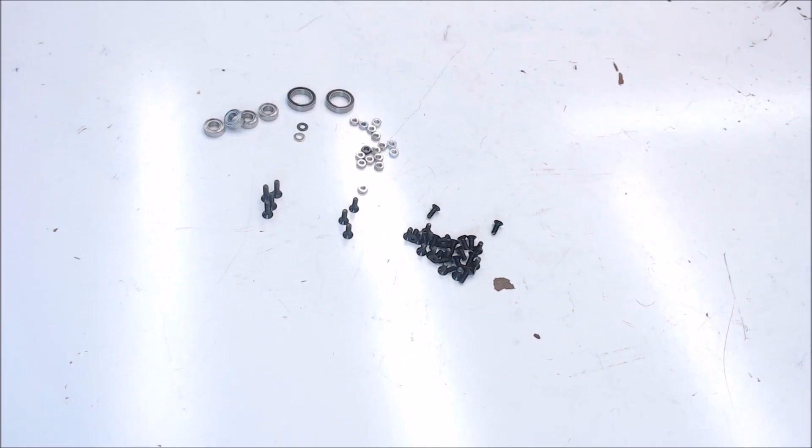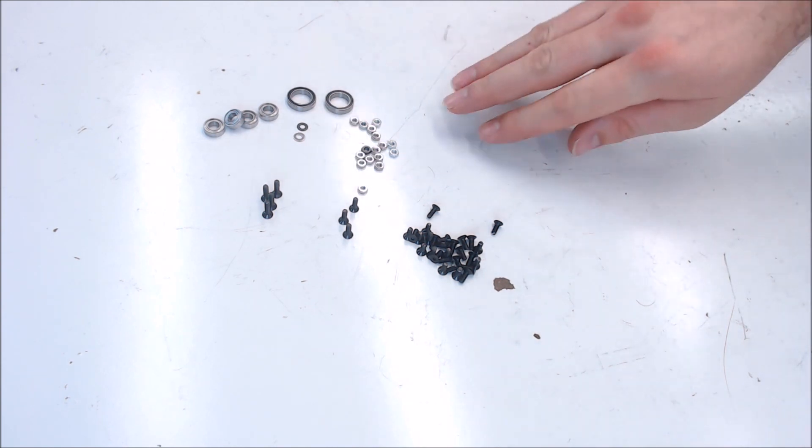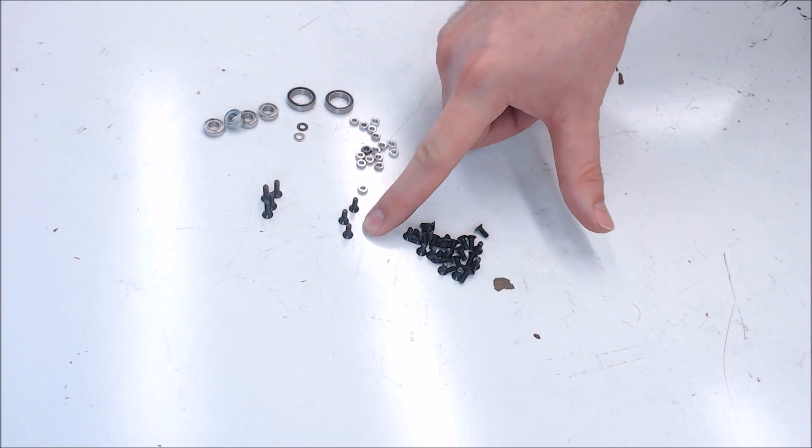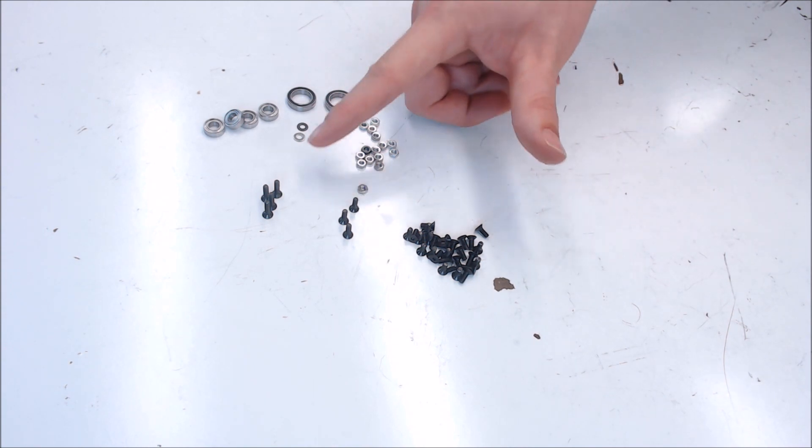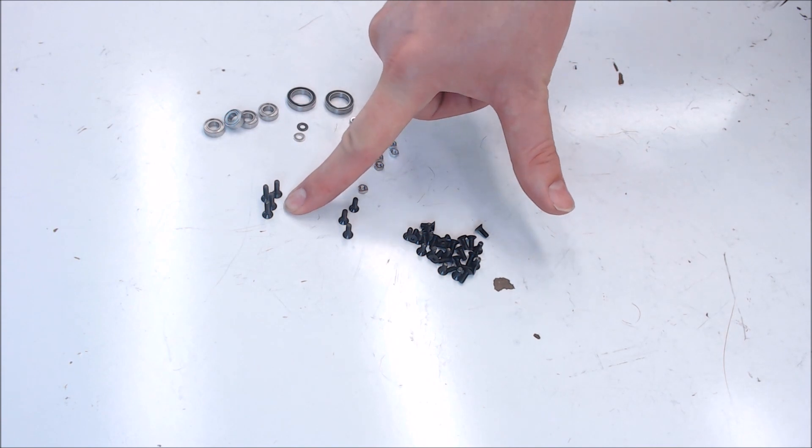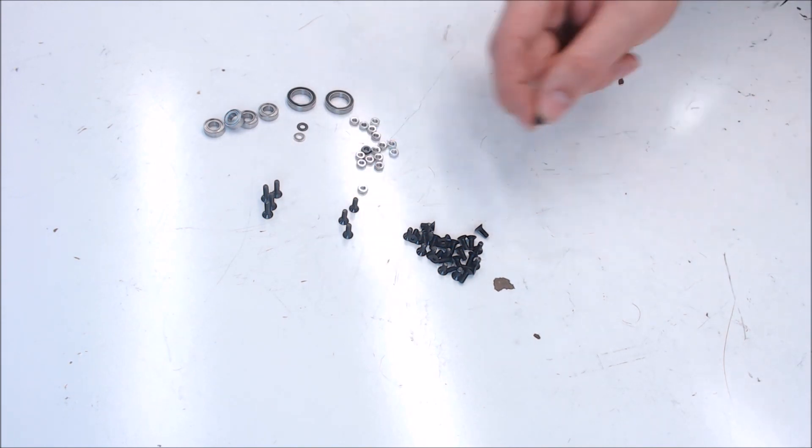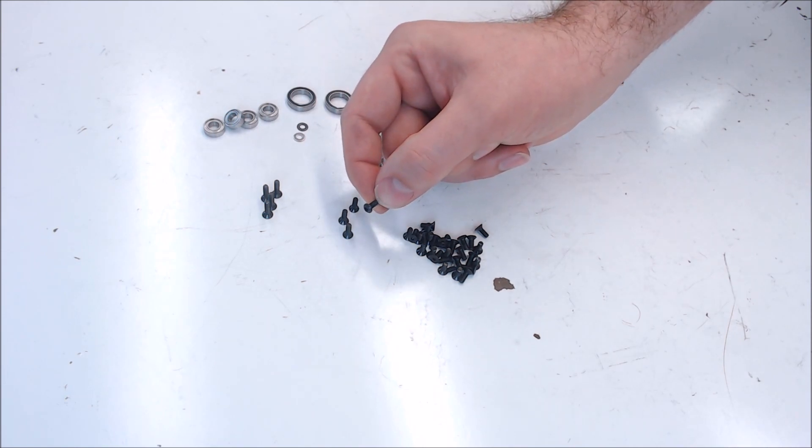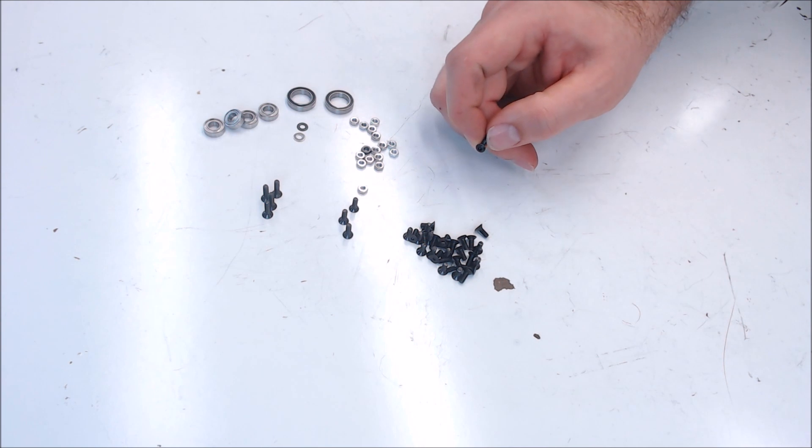And here's all the non-printed parts you'll need just to build the body. Four 8x12x3.5 bearings, two 12x18x4 bearings, a couple of M3 washers, around 20 M3 nuts. You'll need roughly 25 M3 x 8mm countersunk screws, three M3 x 10mm countersunk screws, and four M3 x 12mm countersunk screws. The build does call for some M3 x 8mm button head screws, but I've found this is more for aesthetics and you can get by with countersunk screws if you like.